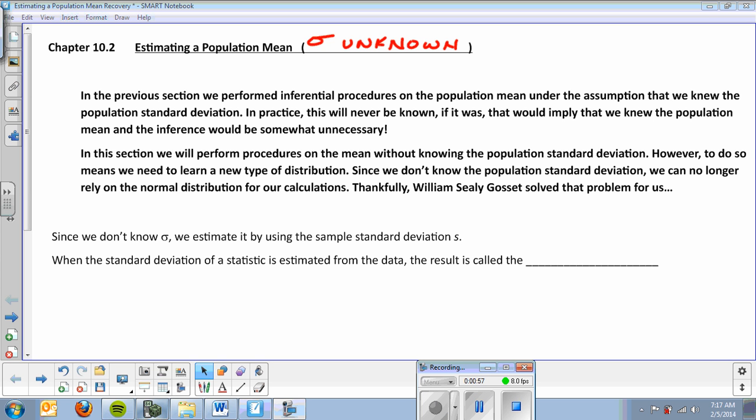If we don't know sigma, we can't really use a normal distribution. If you read along, it says in this section we'll perform procedures on the mean without knowing the population standard deviation. However, to do so means we will need to learn a new type of distribution. Since we don't know the population standard deviation, we can no longer rely on normal distributions for our calculations. Thankfully, William Seeley Gossett solved that problem for us.